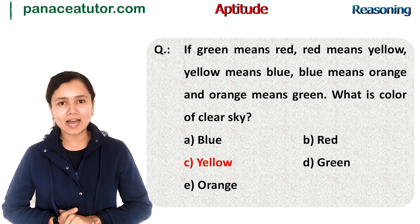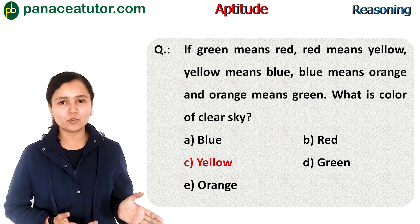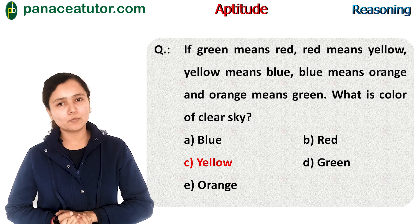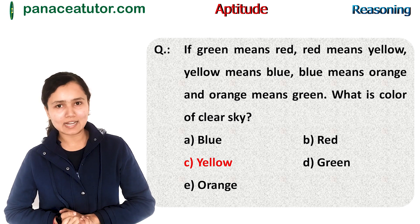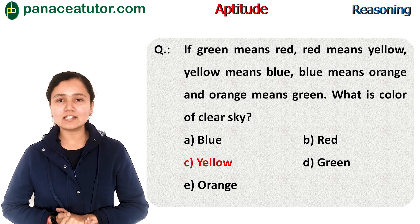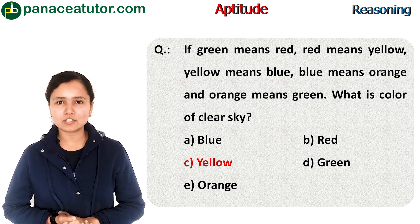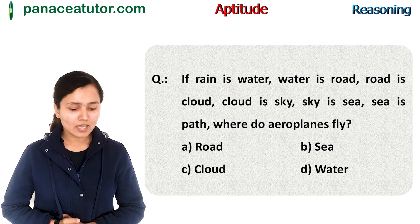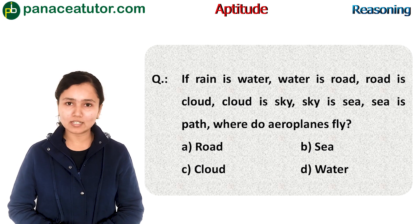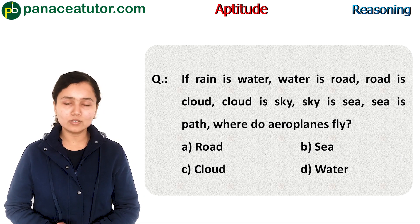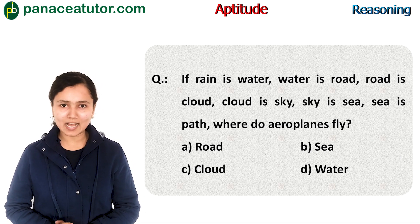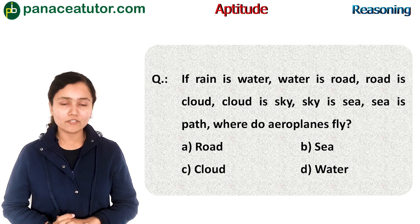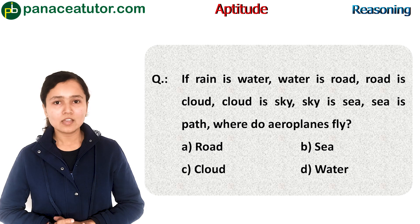It's that easy to attempt. Just keep in mind whether the question uses 'called' or 'means'. Note that 'is' and 'is called' have no difference, so we follow the same 'called' approach — move forward and take the second answer. Practice question: If rain is water, water is road, road is cloud, cloud is sky, sky is sea, and sea is path — then where do aeroplanes fly?